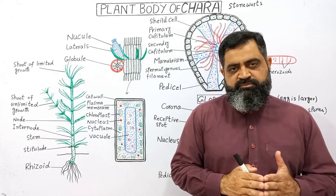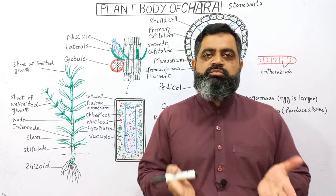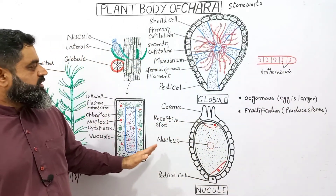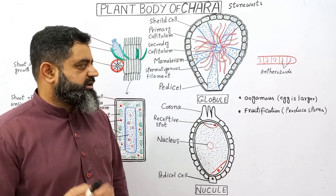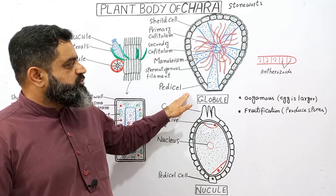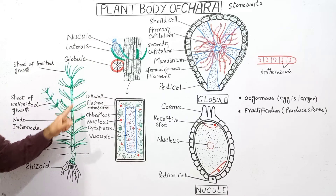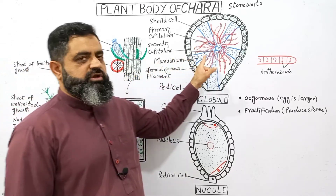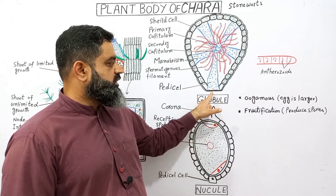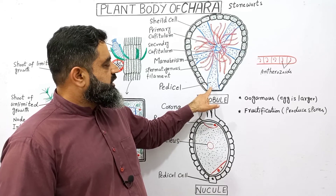Now we are going to discuss the reproductive fructifications — the globule and the nucule. I have already made a diagram for you. Here is the globule, which is the male fructification, enlarged many times to see in detail. In Chara, reproduction is oogamous — the egg is larger while the sperms are smaller. Some branches contain male and female fructifications. The globule is attached to the branch with the help of a pedicel, which enlarges and goes into the center of the structure.